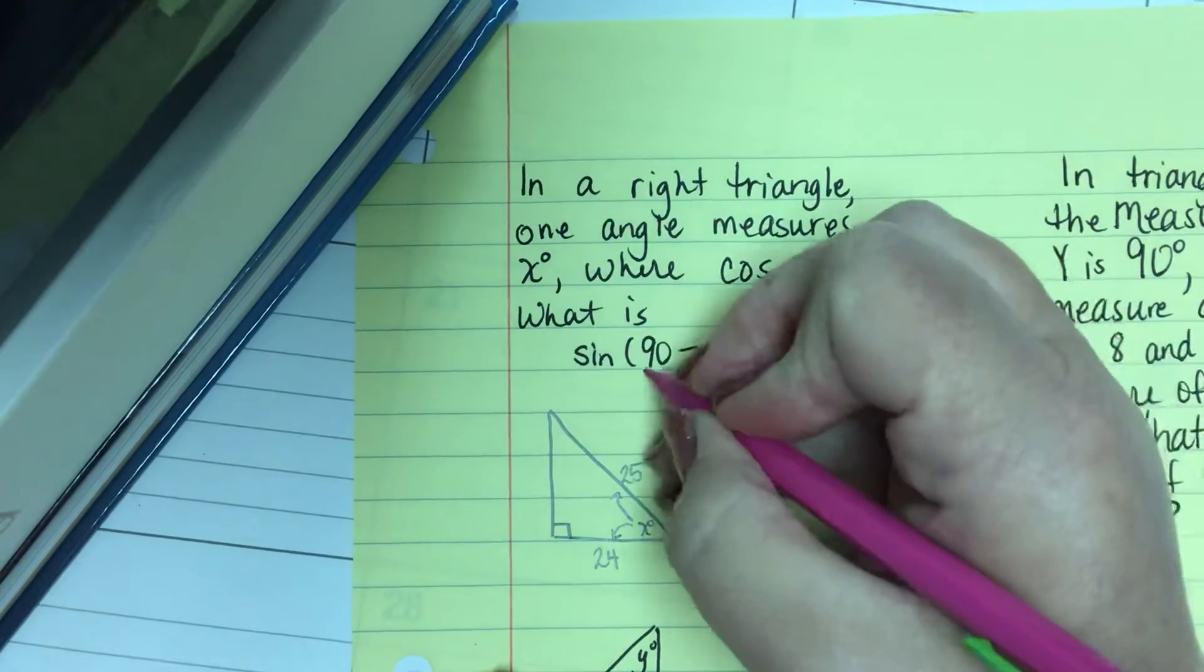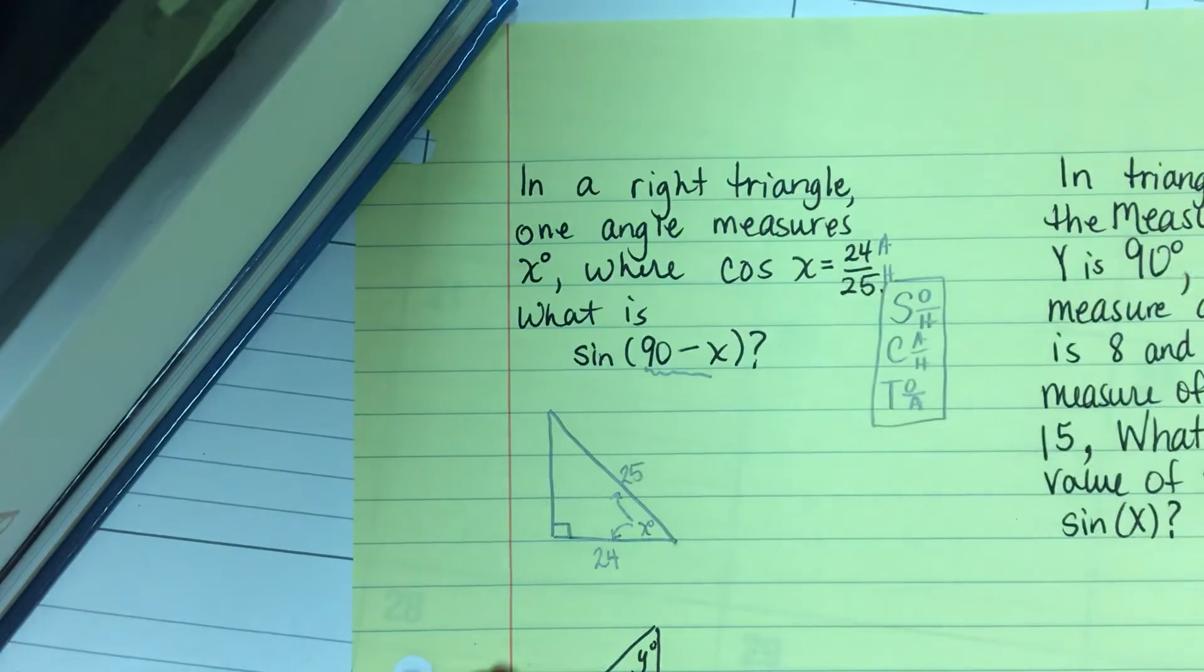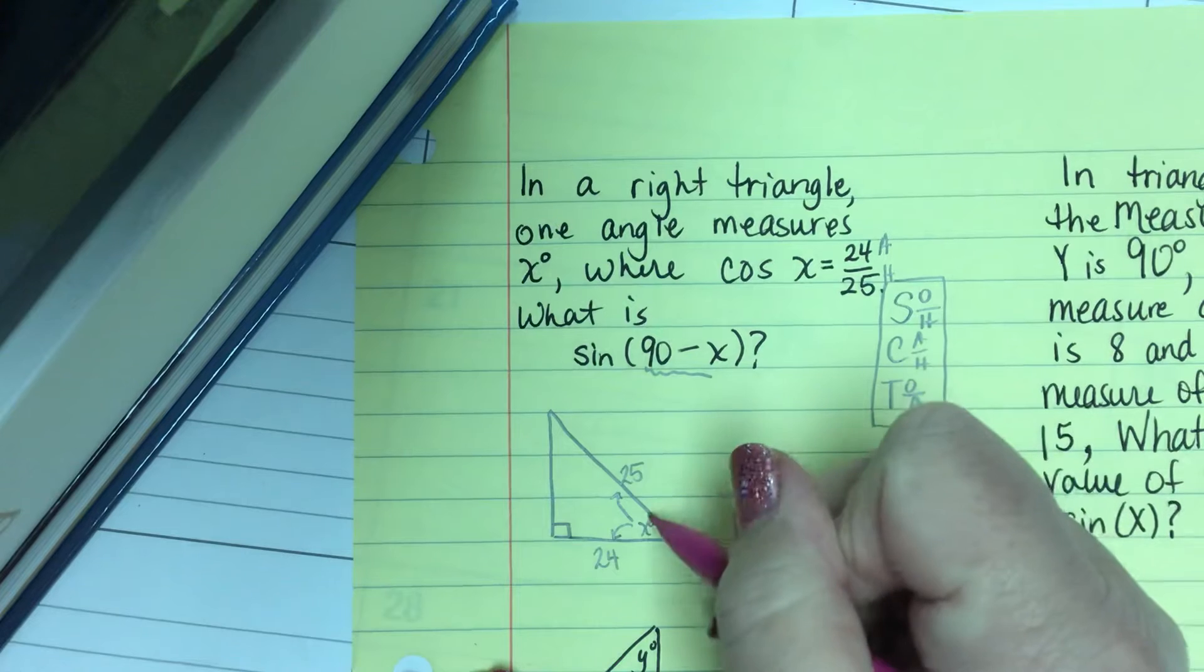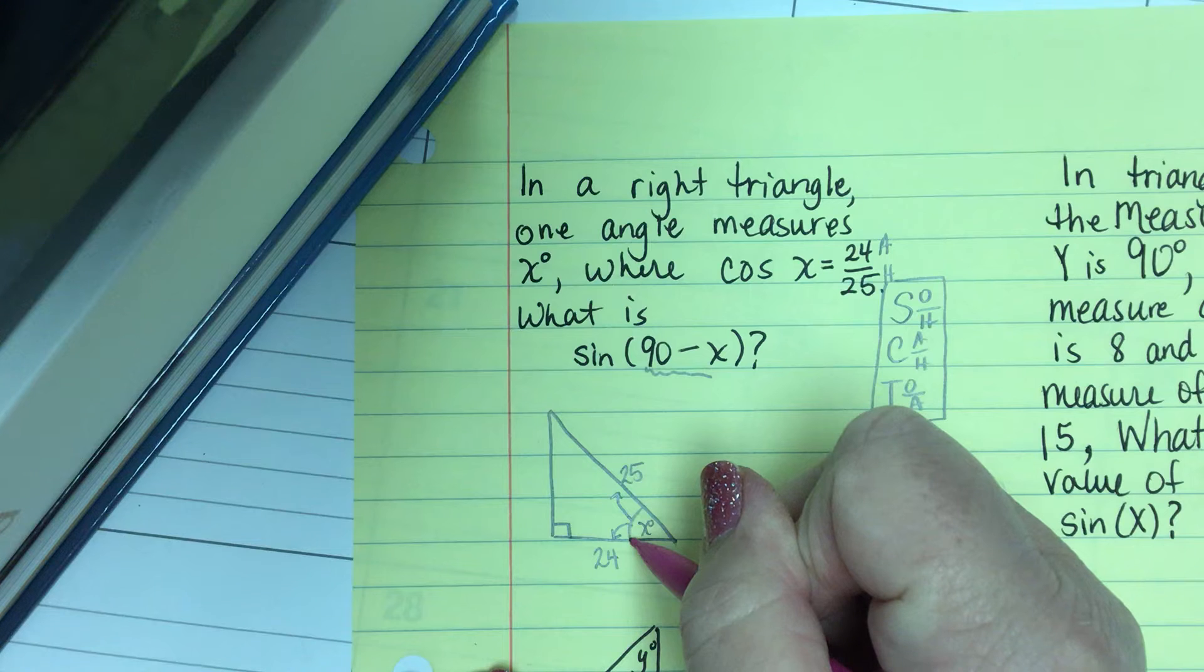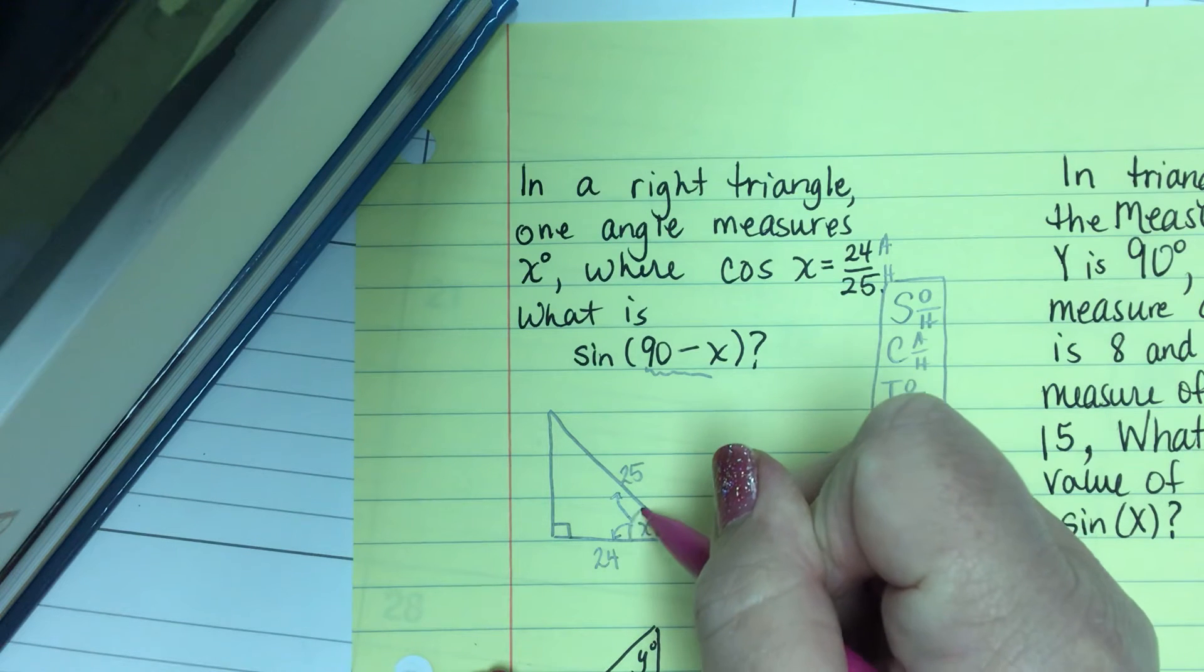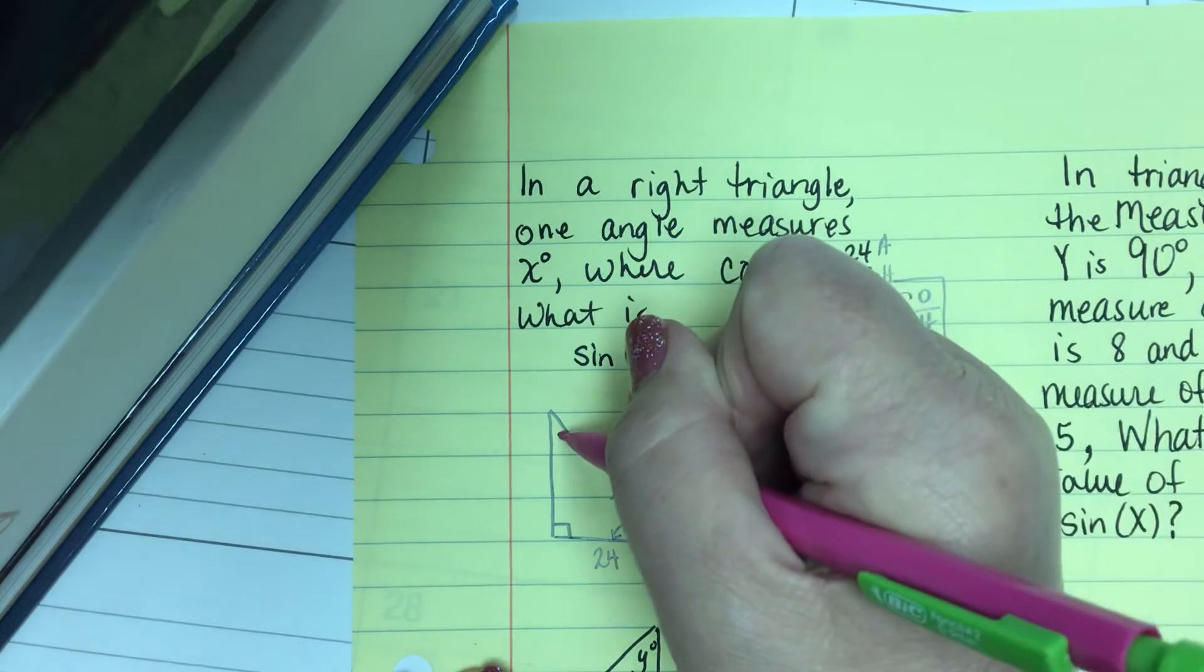Now let's talk about this first, 90 minus x. If this is x degrees, where would 90 minus x be? Well let's think for a moment. If this is 30 degrees, what's 90 minus 30? Well that's 60, and that would be here.